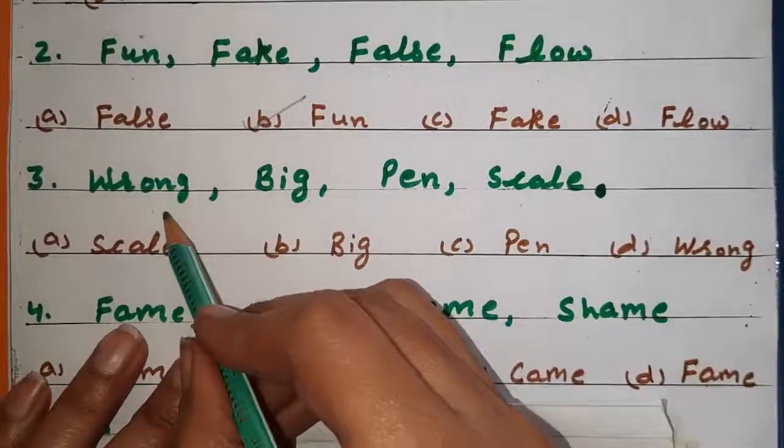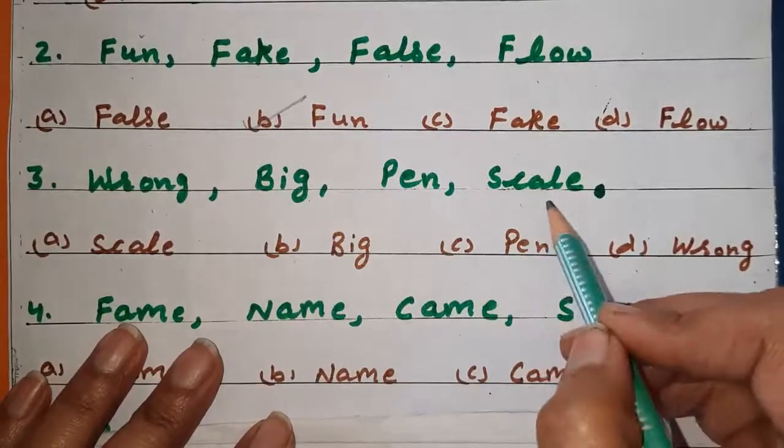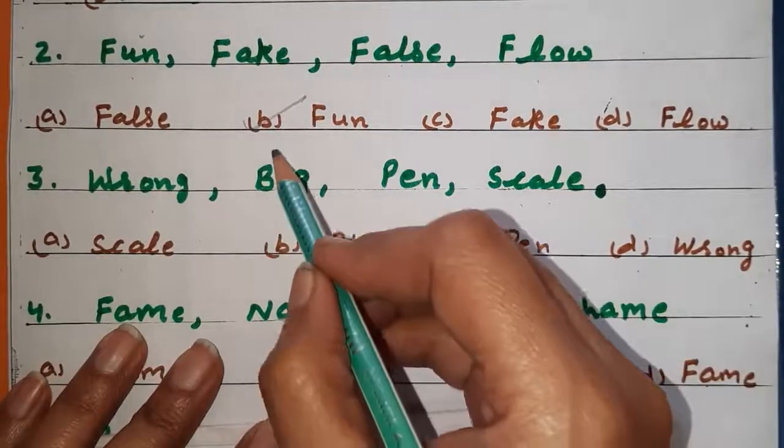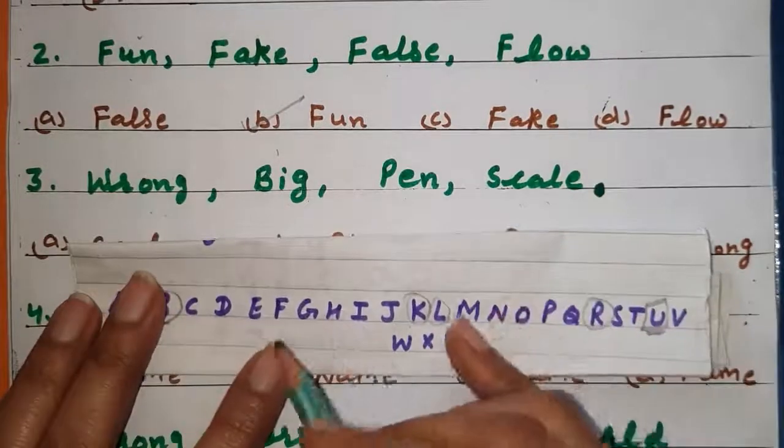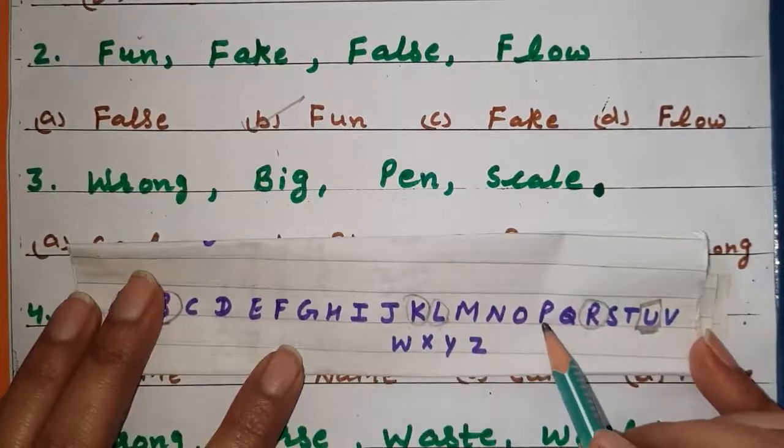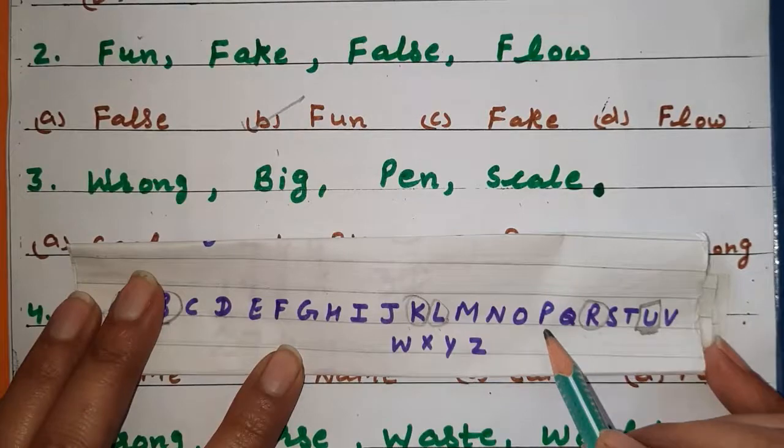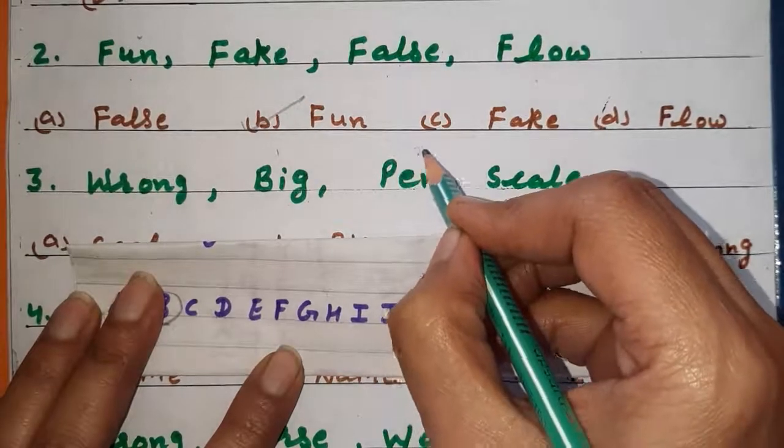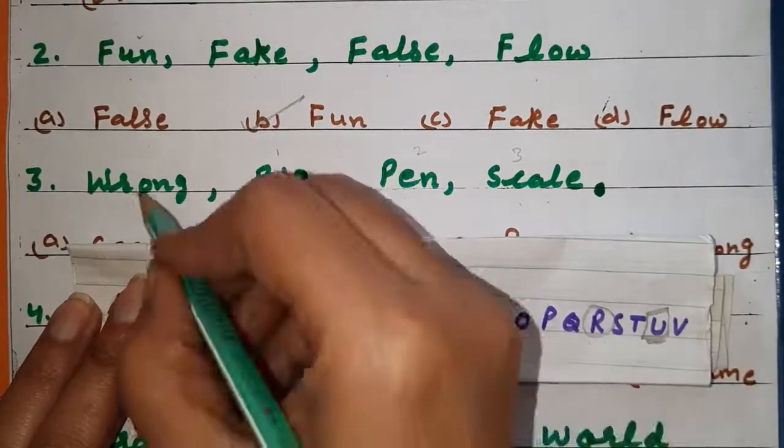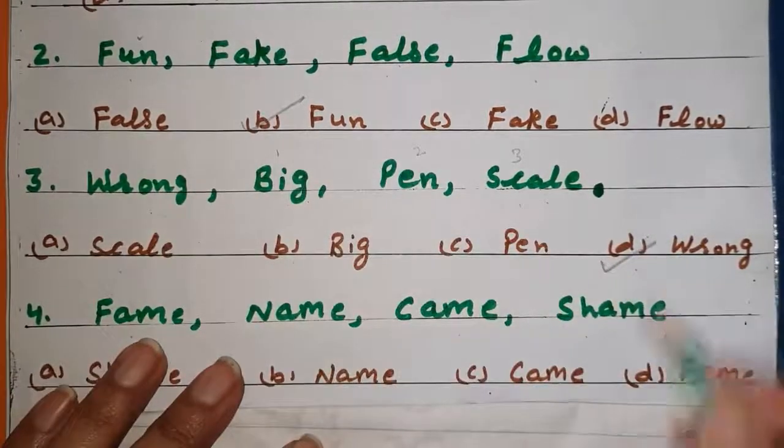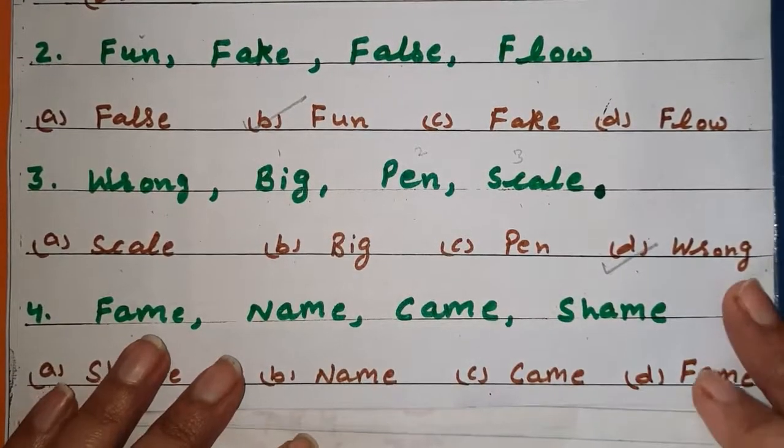Next is third. Wrong, big, pen, scale. Now B, it will be first. Now look here, P, S, P. So P is the second one. S third. Last will be W. So our answer is wrong. Got it?